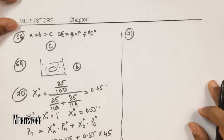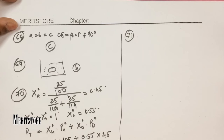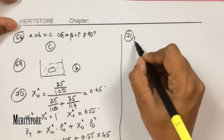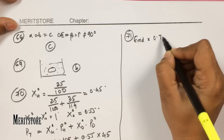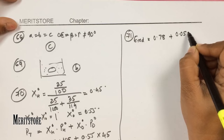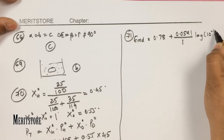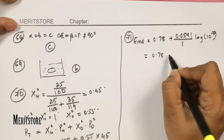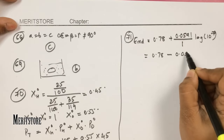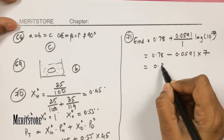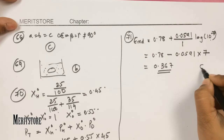Question number 71: the standard reduction potential for a half-cell reaction is given as 0.78 V, with one electron involved. Using the Nernst equation for neutral solution (concentration = 10⁻⁷): E = 0.78 − (0.0591/1) × log(10⁷) = 0.78 − 0.0591 × 7 = 0.78 − 0.4137 = 0.367 V. Therefore option C.